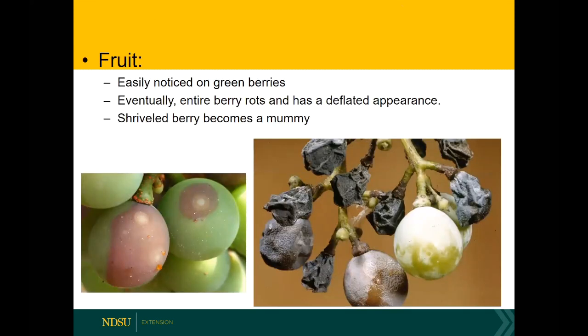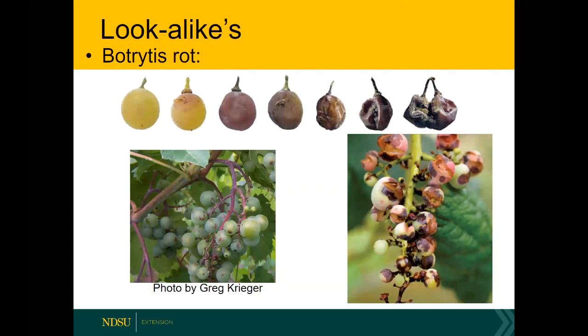On the fruit, it's easy to notice on green berries if you get close. The infection starts as a small white dot, then has a bullseye appearance with a lighter brown ring around it. The berry will then turn brown, and as the entire berry becomes infected they shrivel up, dry out, and become what's called mummies. There are some pathogens that can look similar on the fruit to black rot.